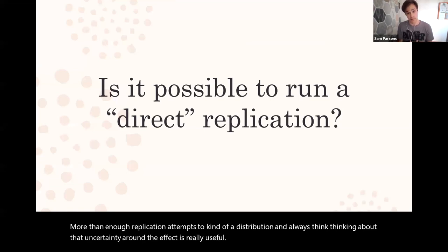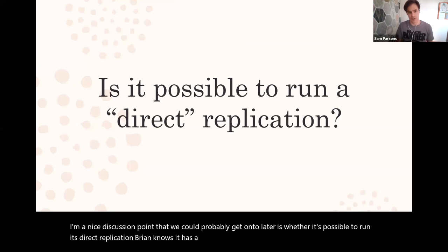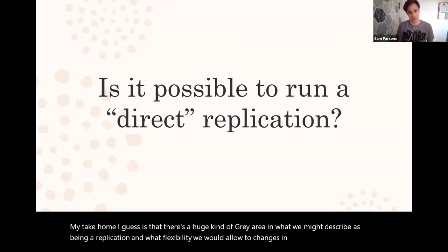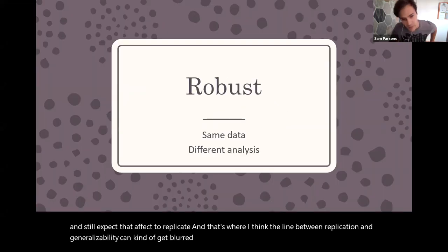I think what's important here, my big take home is that what we really need to do is think in a meta-analytic way about collections of effect sizes. If we only have one replication attempt then we only have two data points and it's much harder to determine whether that effect quote unquote exists or not, whereas in this case we have more than enough replication attempts to have a distribution. I always think thinking about that uncertainty around the effect is really useful. A nice discussion point we could get onto later is whether it's possible to run a direct replication. My take home is that there's a huge gray area in what we might describe as being a replication and what flexibility we would allow to changes in the procedures or samples and still expect that effect to replicate. That's where I think the line between replication and generalizability can get blurred a little bit sometimes.